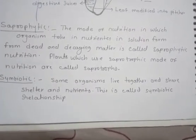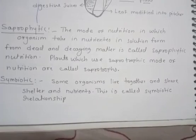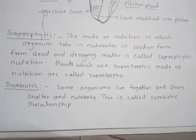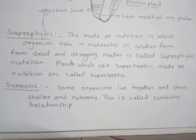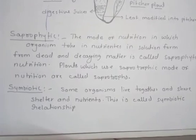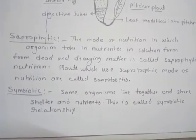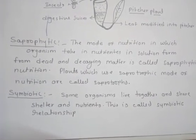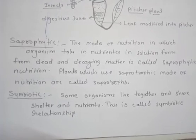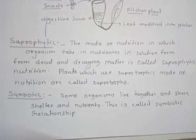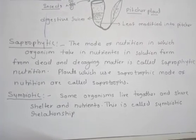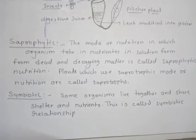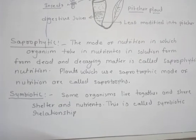The last type is symbiotic nutrition. Some organisms live together and share shelter and nutrients — this is called a symbiotic relationship. For example, certain fungi live in the roots of a tree. The tree provides nutrients to the fungi, and in return receives help from the fungi to take water and nutrients from the soil.